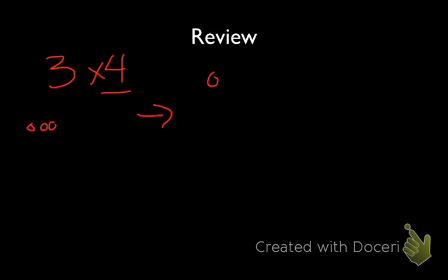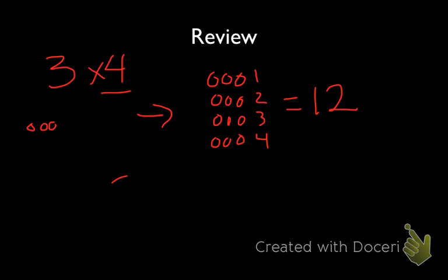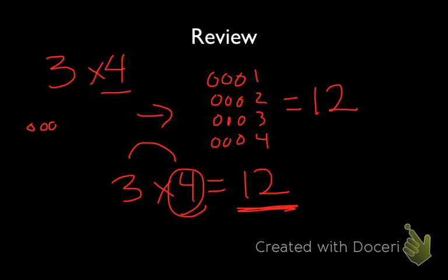If we set this up as an array, we would have 4 groups of 3, which gives us 12. So 3 times 4 is 12. Another way to look at it is that 12 is going to be 4 times as big as our original factor of 3.